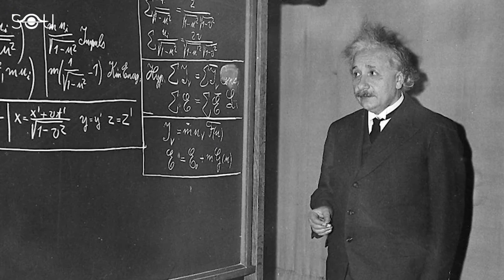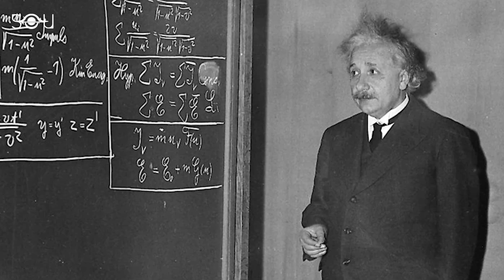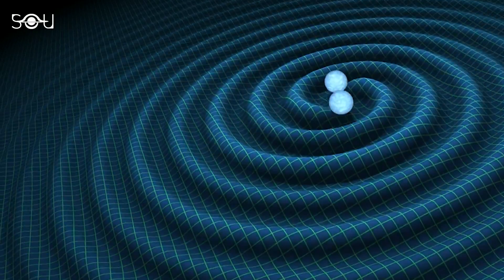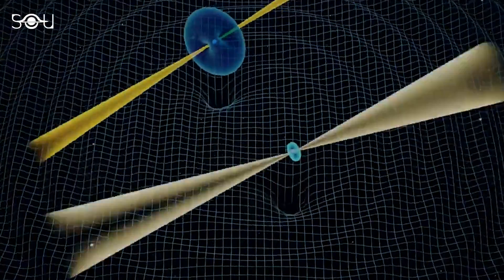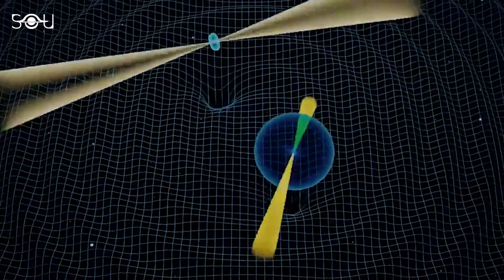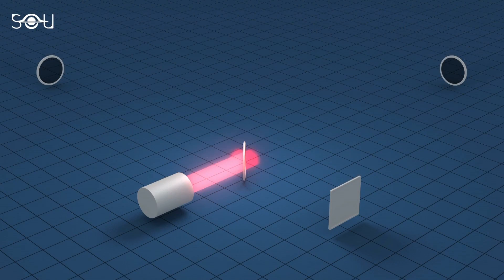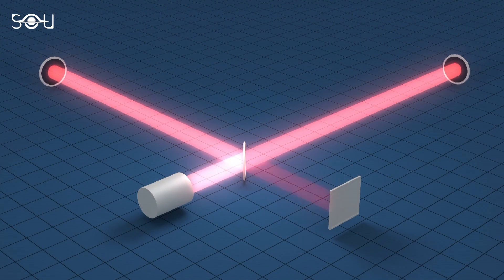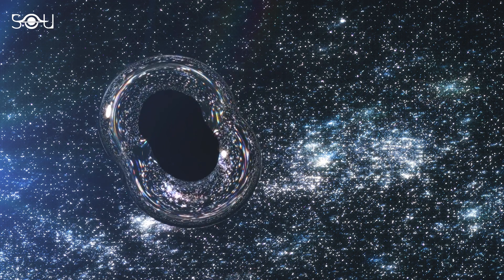He even submitted a paper in 1936 proving the non-existence of gravitational waves, but it was rejected, pointing out the possibility of a mistake. The first proof of their existence came in 1974 through their indirect observation by studying the behavior of binary pulsars, which was consistent with the prediction of general relativity. Direct evidence of their existence was obtained in September 2015, when LIGO detected these waves generated by two colliding black holes, 1.3 billion light-years away.